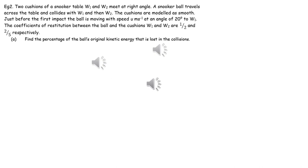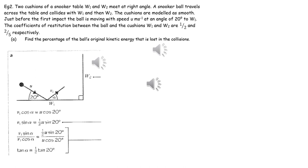This second example is very similar to the first example, except that we don't actually know the numerical value of the speed of the object before it impacts with the horizontal surface. So all our calculations will be in terms of U. We first need to work out the components of the velocity parallel and perpendicular to the surface before impact.